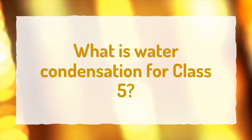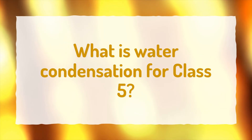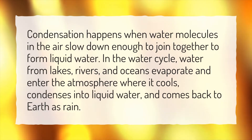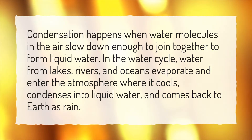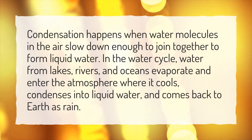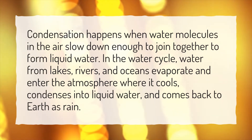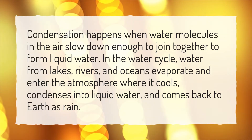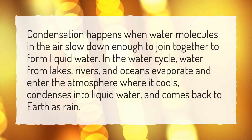What is water condensation for class 5? Condensation happens when water molecules in the air slow down enough to join together to form liquid water. In the water cycle, water from lakes, rivers, and oceans evaporate and enter the atmosphere where it cools, condenses into liquid water, and comes back to earth as rain.